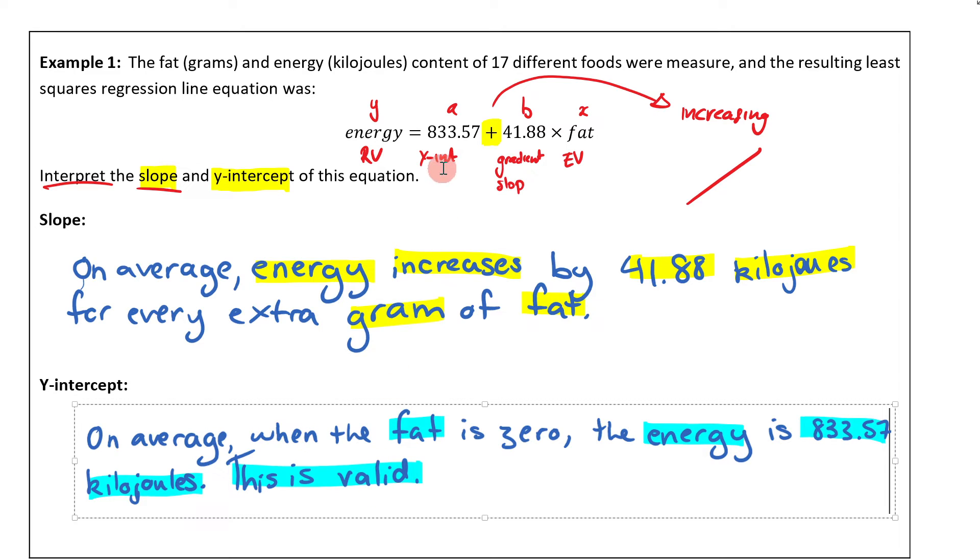Remember, your y-intercept occurs when your x is zero. In this case, your explanatory variable is zero, which means zero fat. It is possible to have a food which contains no fat, and one of these foods could contain no fat.